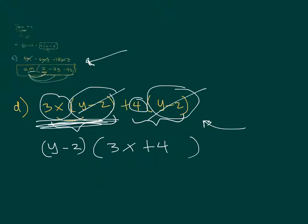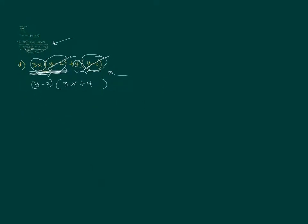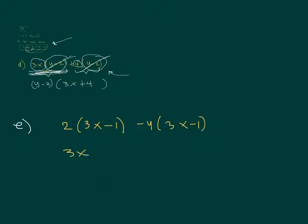Letter E: 2 times (3x minus 1) minus y times (3x minus 1). Remember, we're not distributing. What is the common factor? It's (3x minus 1). What's left in the first term after factoring it out is 2, and in the second term is negative y. So the factored form is (3x minus 1)(2 minus y). That's everything we need for this topic — factoring focuses on the common factor.